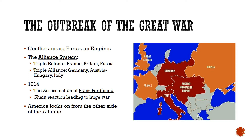In 1914, just such a thing happens. The Prince of Austria-Hungary is assassinated by a Serbian. Serbia is a small country in the southeastern part of Europe, but importantly, Serbia is allied to Russia. So Austria-Hungary is really angry at Serbia, they declare war on Serbia, and this kicks off a chain reaction that sucks everybody else into the war.